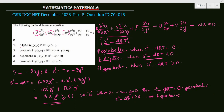Now let's check the options. Option 1 says elliptic — but the equation is elliptic only when S² - 4RT < 0. Since we already established S² - 4RT ≥ 0 always, it cannot be elliptic. Option 1 is false. Option 2 says parabolic when x > 0 and y > 0 — but S² - 4RT = 0 only when x = 0 or y = 0. Since x and y are both positive here, it cannot be parabolic. Option 2 is false.